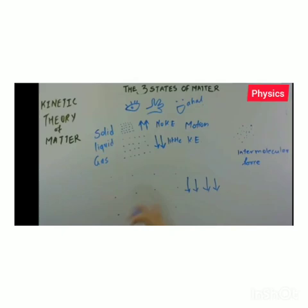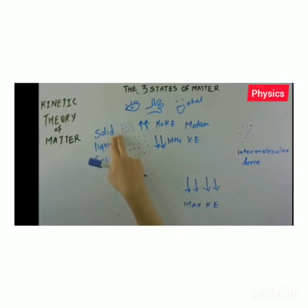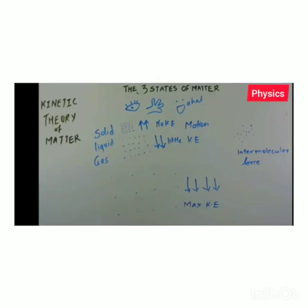The particles in gases are very far away from each other. They have the maximum motion — they move randomly and very fast — and therefore they have maximum kinetic energy. So gases have maximum energy, solids have the least energy, and liquids have a moderate amount of kinetic energy.